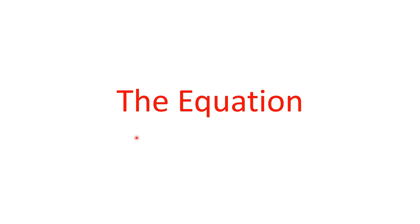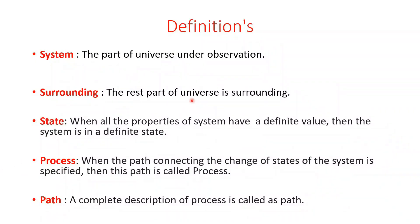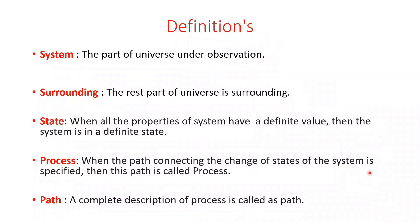Now we derive the equation of the first law of thermodynamics. Before deriving, we must know some basic definitions. A system is the part of the universe under observation; the rest is the surroundings. A state is defined when all properties of the system have definite values — for example, known pressure, volume, and temperature. A process is when the path connecting the change of the system is specified, and the complete description of that process is called the path.